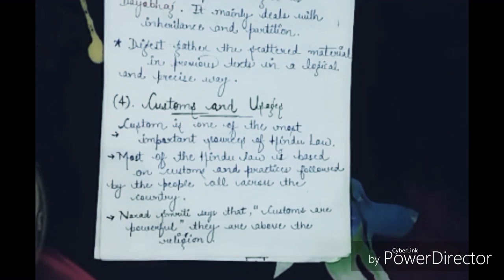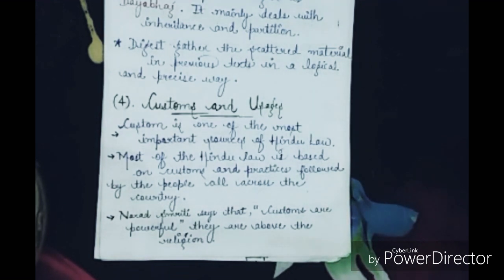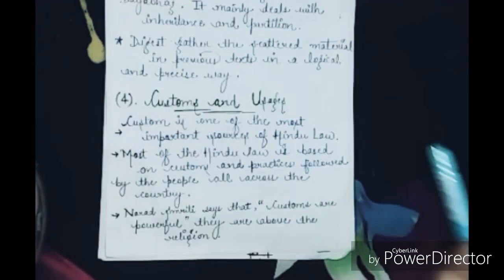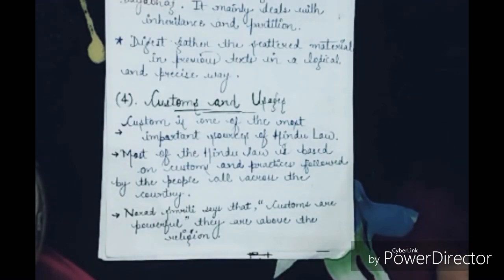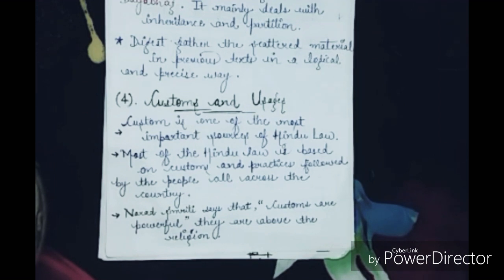The majority of Hindu law is based on customs and usages, and all over India people follow our traditions and culture through these customs. According to Narad Smriti, customs are powerful — they are even above religion. Narad Smriti states that customs are the most powerful, and at one stage customs are also considered above religion. This shows how much importance customs have in our previous scriptures and smritis.